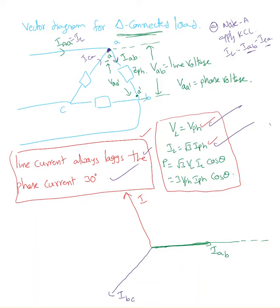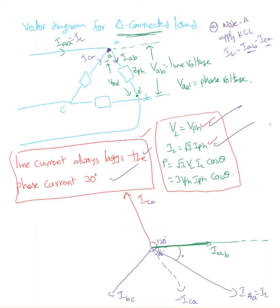To draw the vector diagram for a delta-connected load, we use phase currents: IAB, IBC, ICA — all 120 degrees apart. To find line current IA, which equals IAB minus ICA, extend ICA in the opposite direction to get negative ICA. The angle between them is 60 degrees, and combining IAB minus ICA gives the line current IA, with a 30-degree angle in the vector diagram.